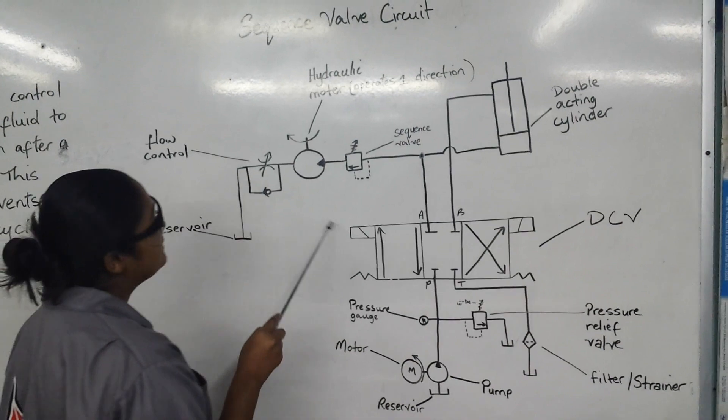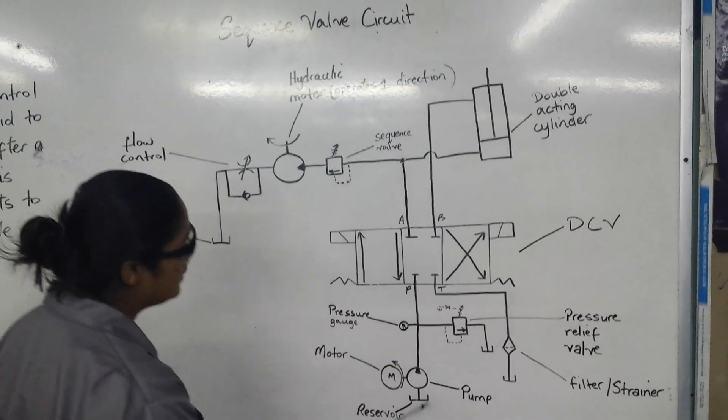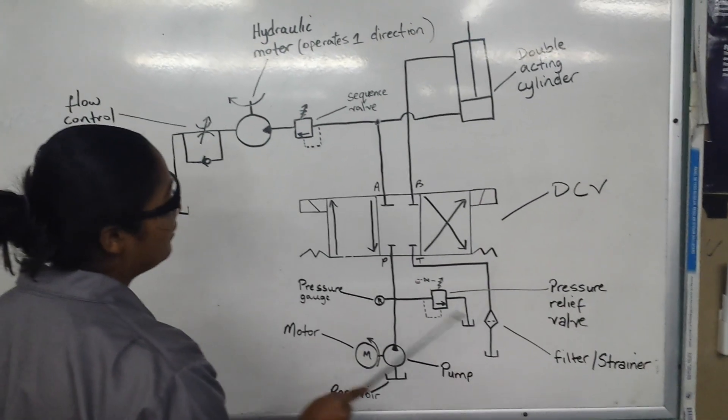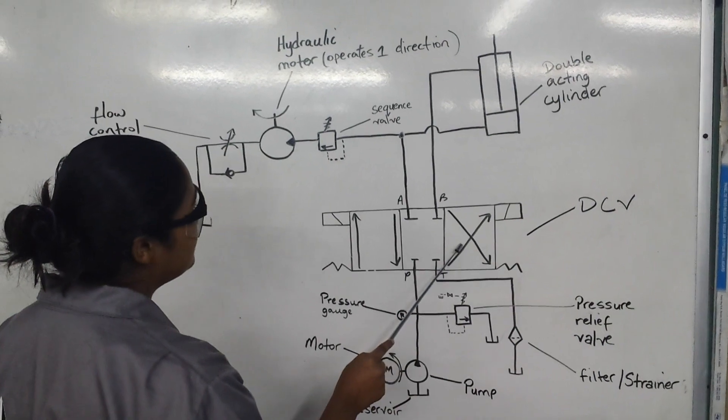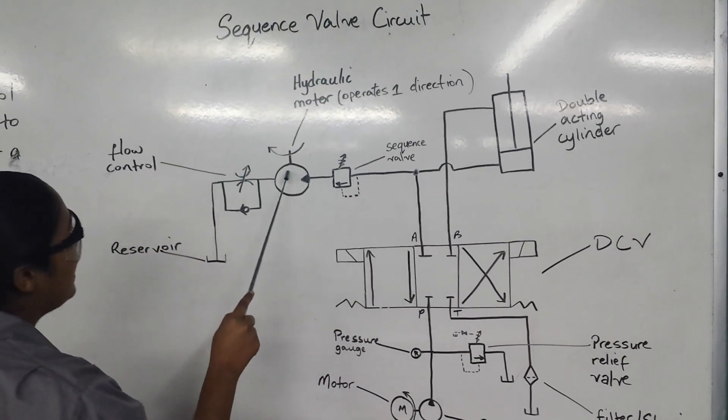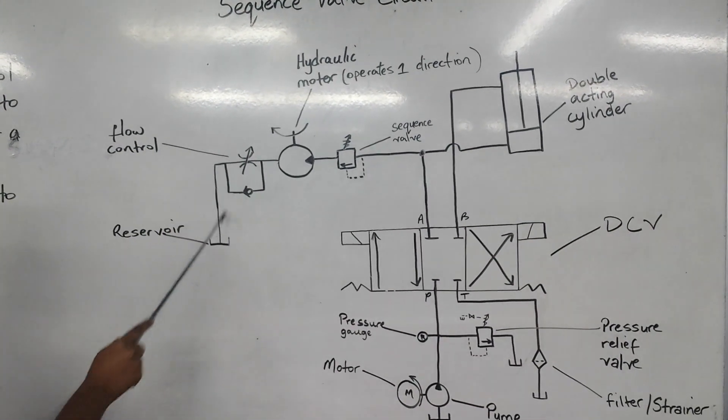Over here we have a schematic showing a sequence valve circuit. It consists of a reservoir, pump, motor, pressure gauge, pressure relief valve, filter or strainer, DCV, double acting cylinder, sequence valve, hydraulic motor which operates in one direction, flow control, and reservoir.